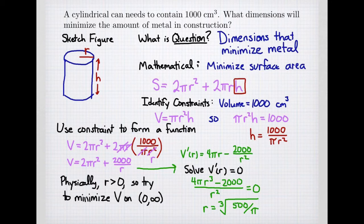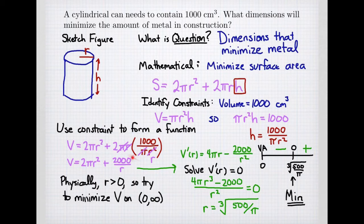Once I have a critical point, I need to do sign analysis and find out where my function was increasing or decreasing. At 0, I can't have 0, that's a vertical asymptote in my volume graph, and I have my critical point, the cube root of 500 over π. I now check points to the left and the right, and I discover that on the left it's negative, and on the right it's positive. So my function will be decreasing and then increasing, and that means that I have a minimum happening at this critical point.